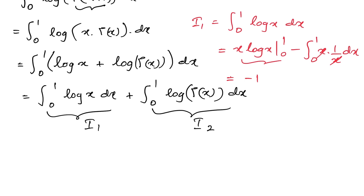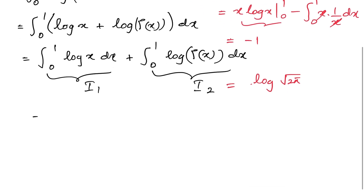For I2, which is the integral from 0 to 1 of ln(Γ(x)) dx, we evaluated this in a previous video. The answer is ln(√(2π)). A link to that video will be in the description and a card will be added.